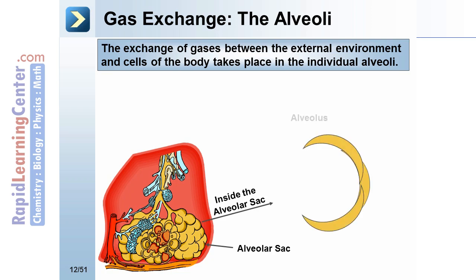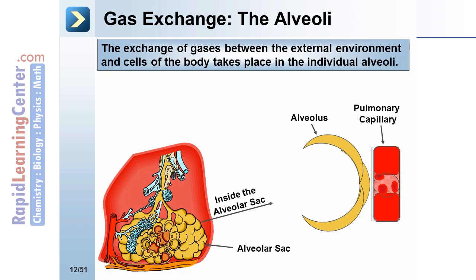Here is a blown-up view of the individual alveolus with the pulmonary capillary right up against it. The respiratory membrane allows carbon dioxide to diffuse from the blood into the alveoli so it can be exhaled, and allows oxygen to diffuse into the blood.